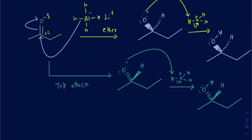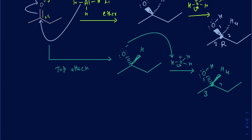Now, which product is R and which is S? When looking at the chiral center for the bottom attack product — priorities 1, 2, 3 — hydrogen is already back into the page as the lowest priority group, and going 1, 2, 3 clockwise means that's R. For the top attack product, hydrogen is coming out of the page, so whatever direction it appears you must flip it. It seems clockwise, but you flip it to counterclockwise, so that product is actually S.